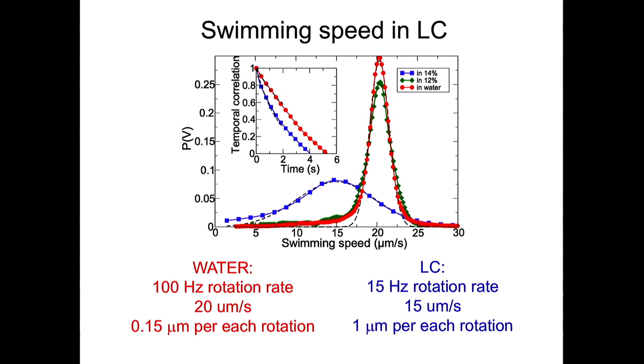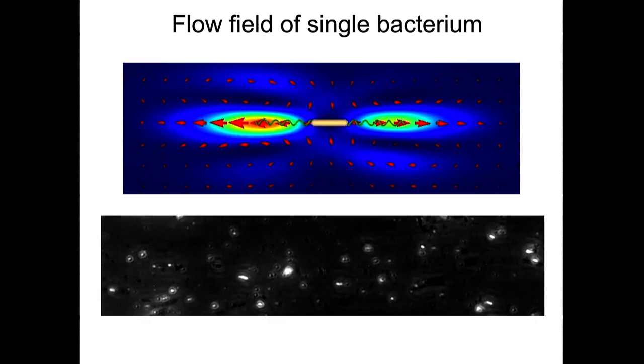And the reason why it happens is that in liquid crystal bacteria virtually swim inside a channel, inside a tube. Since the viscosity is very anisotropic, the flow created by a single bacterium is allocated along the line parallel to the bacterial body. The flow decays very slowly in this direction and very fast in the perpendicular direction.